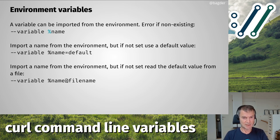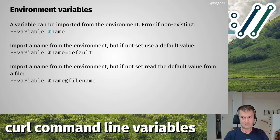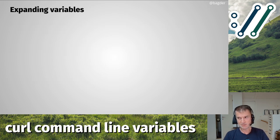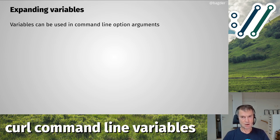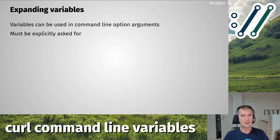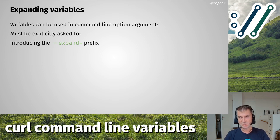You can also combine the approaches: import from the environment, and if it doesn't exist, get the default from a file or from standard input. So we can set variables with content up to 10 megabytes. To actually use them, we need to expand them as arguments to other command line options. We must explicitly ask curl to expand variables in options using the new --expand prefix.